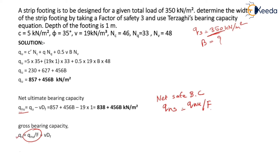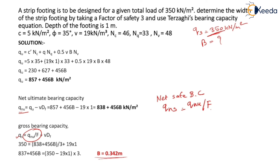Since Qs = 350 kN/m², substituting known values: 350 = (838 + 456B)/3 + 19 × 1. Simplifying: 838 + 456B = (350 − 19) × 3 = 993. Solving gives B = 0.342 m. Therefore, the base width of the strip footing is 0.342 meter.